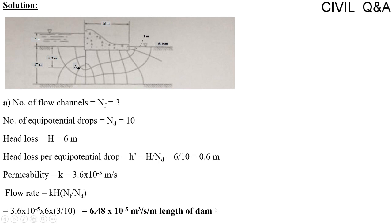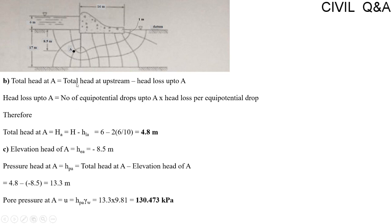To calculate the total head at point A, we calculate the head loss up to A. The total head at A equals total head at upstream minus head loss up to A. The number of equipotential drops up to A is 2 — A lies on the second equipotential line. So total head at A equals 6 meters minus 2 × 0.6, which gives a total head at A equal to 4.8 meters.